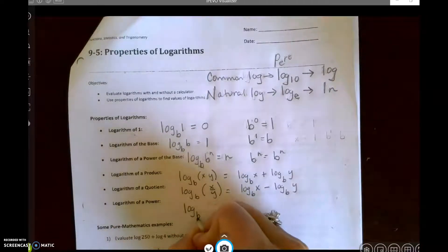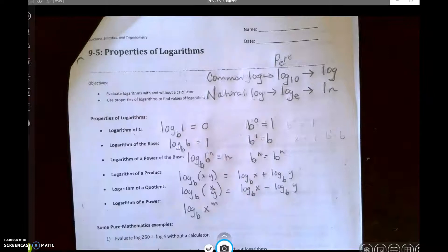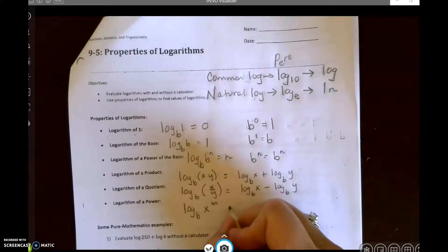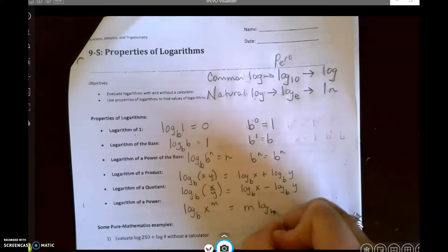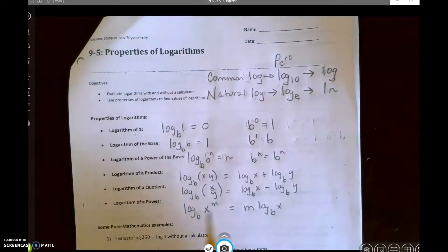Logarithm of a power. Log base b of x to the m. Remember, power to a power, we multiply. So that becomes m times log base b of x. So that exponent becomes a multiplier and it just gets moved to the front.